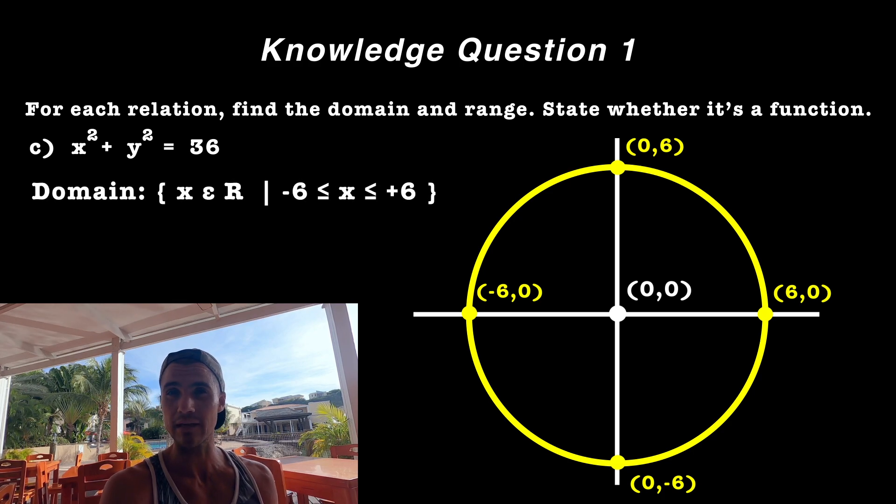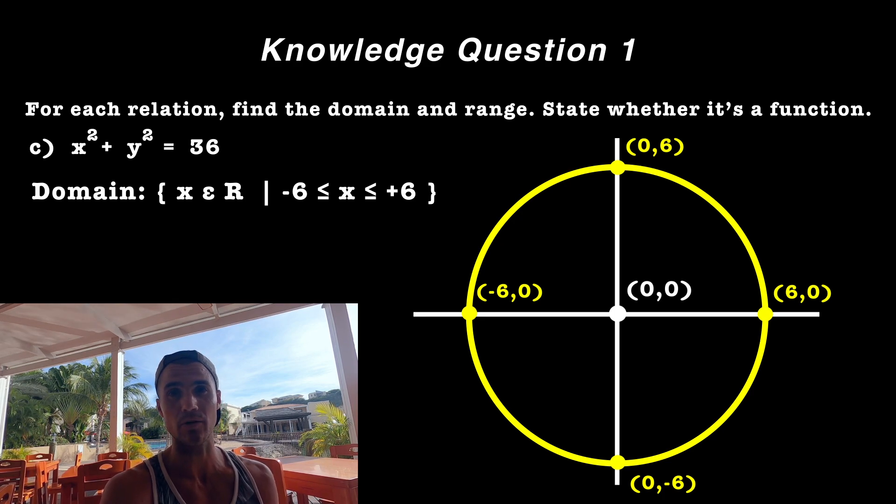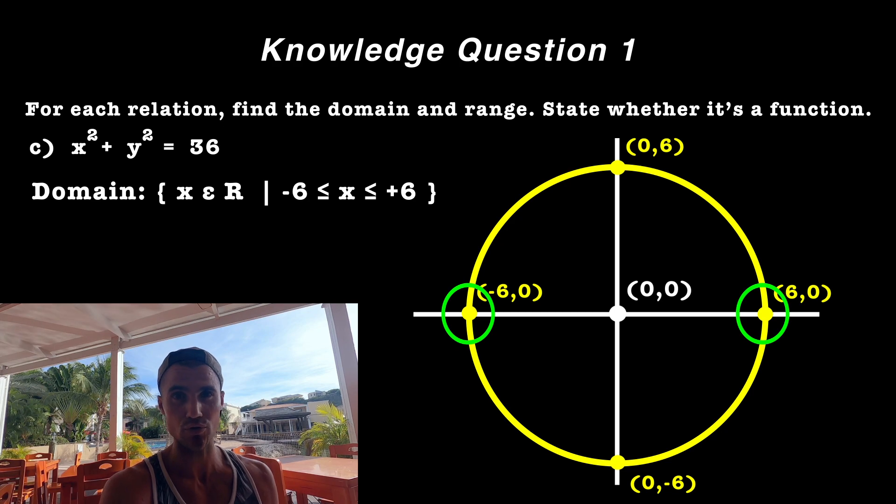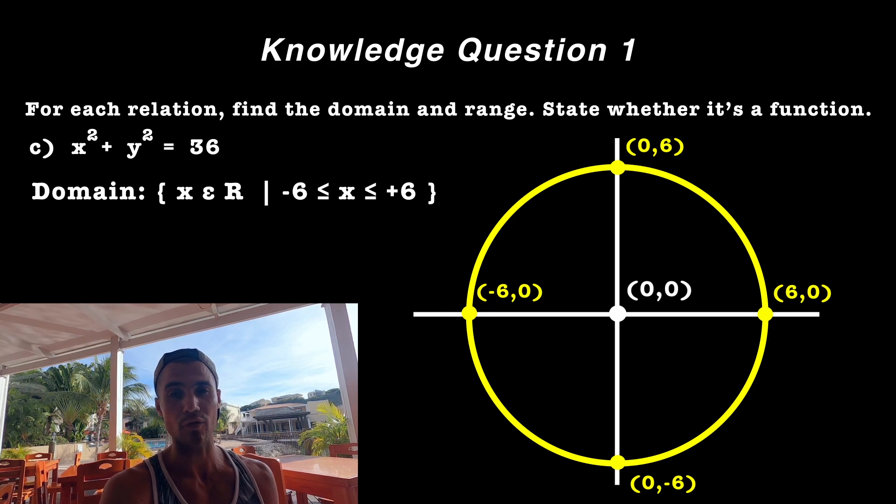Well, basically x can be the element of any real numbers, could be any number as long as it's going to be between negative six and positive six, those two x intercepts. Same thing for the range.